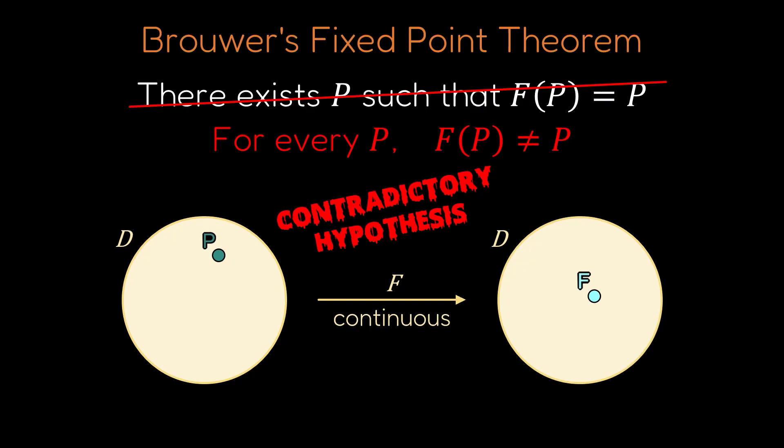From this, we'll conclude that the assumption was false, and therefore, F must have at least one fixed point.